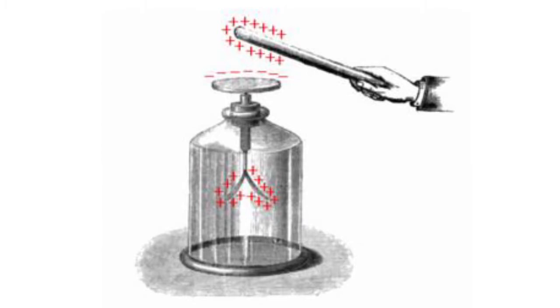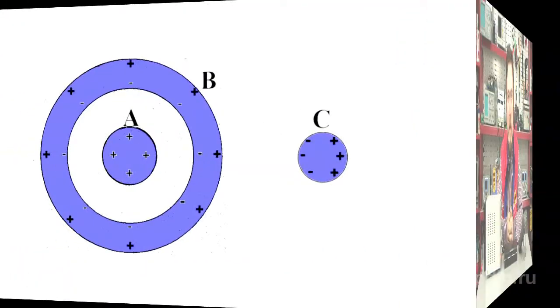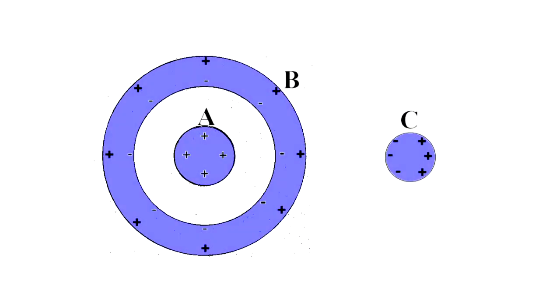If the body charges positively, then the electrons in a neutral body will be attracted to it. If the body's opposite side is earthed, then electrons will flow towards it to replace the opposite charged ones. Thus, the body charges negatively in relation to the ground at the moment of link disconnection.